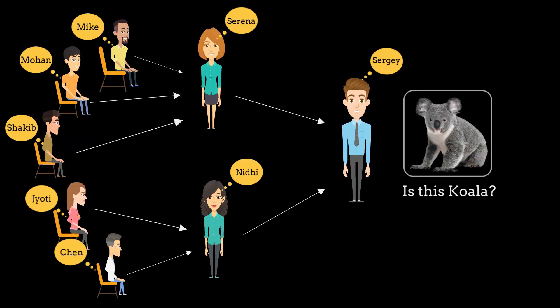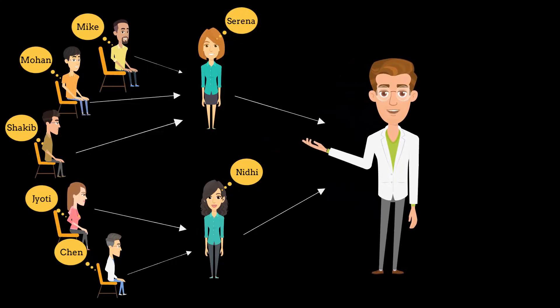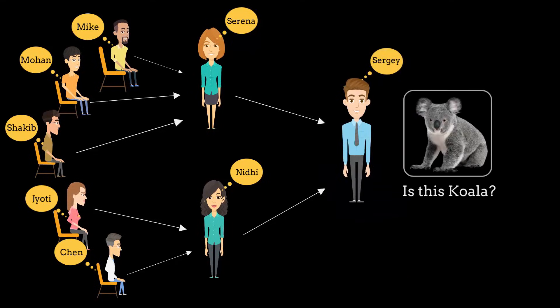This is nothing but a neural network. Each individual person here are individual neurons, and they are working on a specific subtask and passing the result of their subtask to the next group. So Serena and Nidhi are actually, in terms of neural network, a hidden layer. Mike, Mohan, etc., are forming the input or the first layer, and Sergey is the output or the last layer.